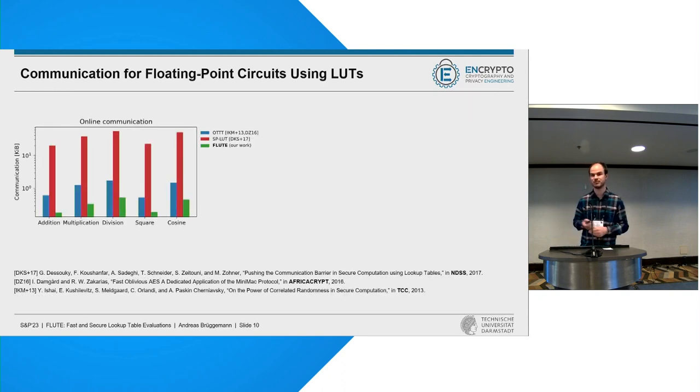So how does this actually perform in realistic circuits? We ran some benchmarks, for example, on circuits for floating point operations. If we look at this and look at the online phase first, we can see that we are able to outperform SPLUT by a factor of 100 in communication. But we are also able to outperform OTT by a factor ranging somewhere between three and four. So this really shows that here the number of output wires is usually much smaller than the number of input wires.